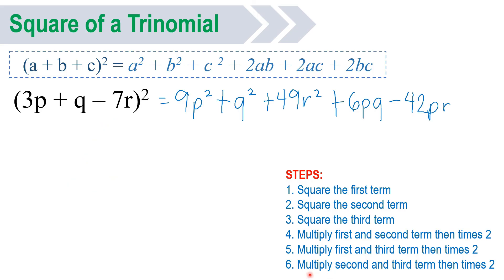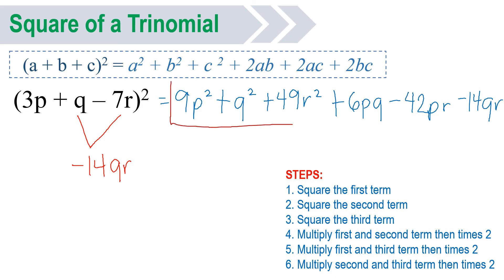Then for the last step, multiply second and third term. Second is q, third is negative 7r, then times 2. So negative 7 times 2, that will be negative 14. Then copy the variable q and r. So we have minus 14qr. Combine like terms — there are no like terms again. Then that's it, that will be your final answer.